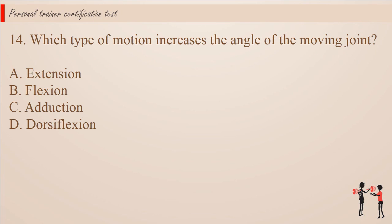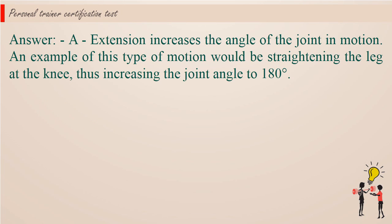Question 14. Which type of motion increases the angle of the moving joint? a. Extension. b. Flexion. c. Adduction. d. Dorsiflexion. Answer: a. Extension increases the angle of the joint in motion. An example of this type of motion would be straightening the leg at the knee, thus increasing the joint angle to 180 degrees.